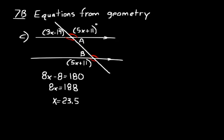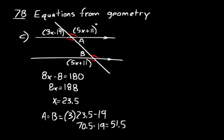Now, let's solve for A and for B. Now, A and B are equal, right? So we could say that A equals B equals, it doesn't equal 23.5. It equals 3X minus 19. So we need to do that, 3 times 23.5 minus 19. And so if we did 23.5 times 3, that would equal 70.5 minus 19. That would equal 51.5. And so that's what A and B equal.